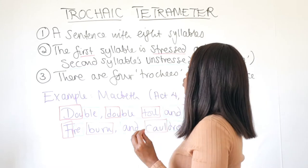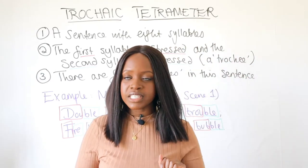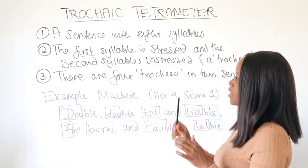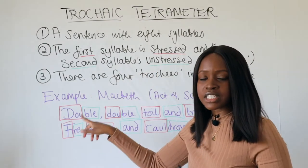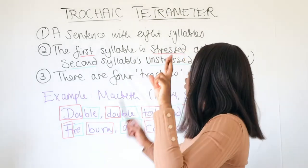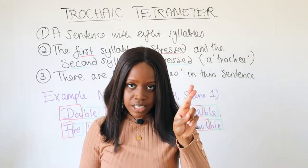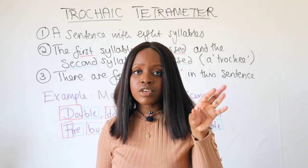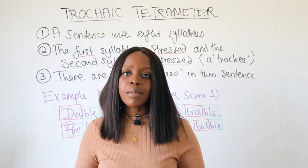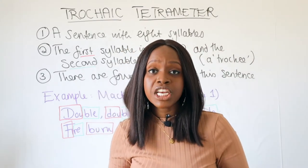When it comes to trochaic tetrameter, it's just a fancy way of saying a line with eight syllables. You can clap eight times as you read through all of the syllables. The first syllable is stressed — it takes just a little bit longer to pronounce — and the second syllable is unstressed, meaning slightly shorter to pronounce. This pairing of a stressed and an unstressed syllable is called a trochee, and this pair happens four times, making up what we call trochaic tetrameter.